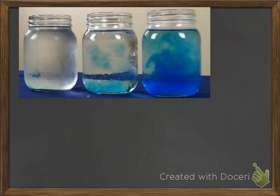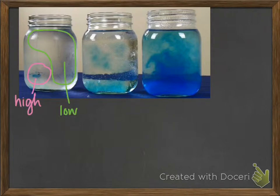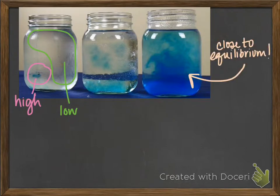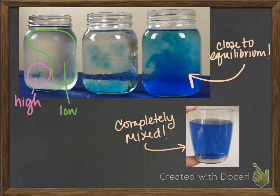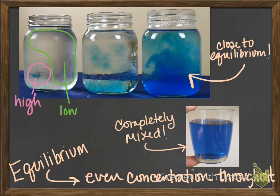If we drop some food coloring in a glass of water, we can see a similar phenomenon. We start with an area of high concentration — the little glob of food coloring — and a large area with a low concentration of food coloring particles. Over time, those particles diffuse through the water until reaching a state we call equilibrium: a completely mixed, even concentration of particles throughout. This is equilibrium.